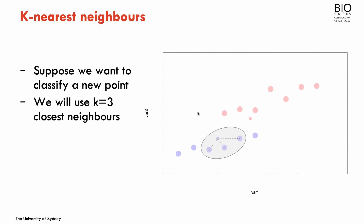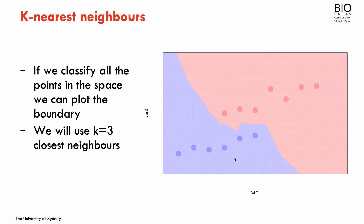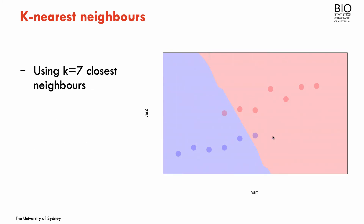I could do this for the entire space of var1 and var2, and I would have a classification region with the border defined. If I had chosen a different number of neighbors — let's say k equals 7 — I would have a different boundary. The higher the number of neighbors, the more smooth this boundary tends to be. With the more extreme classification of k equals 1, where each dot is classified as the closest neighbor, I have a quite complex boundary.